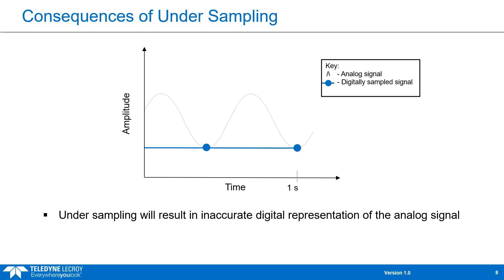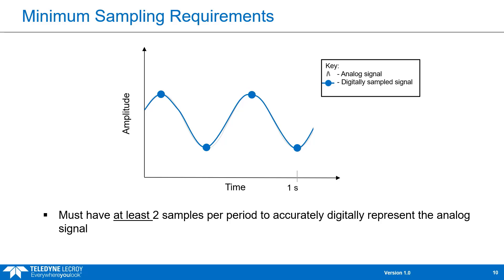Let's take a look at an example of undersampling. If we have this gray analog waveform and this blue digital representation, you can see that at a sample rate of two samples per second we're not really able to capture the frequency of the analog signal — we have an inaccurate digital representation. Even at three samples per second we're still not able to capture it. Essentially you need a minimum sample rate of two samples per period to accurately digitally represent the signal.